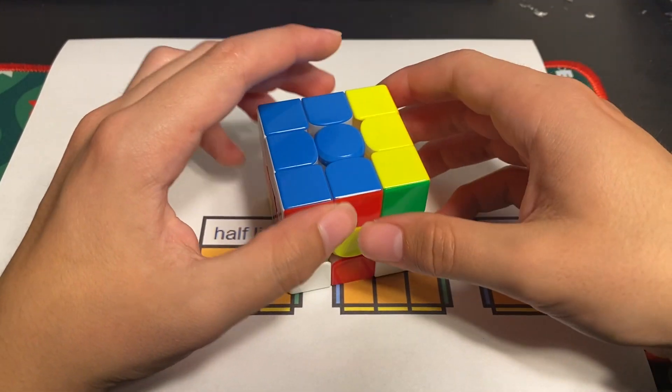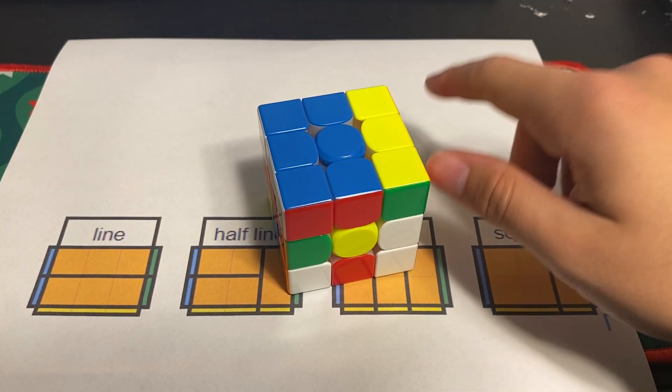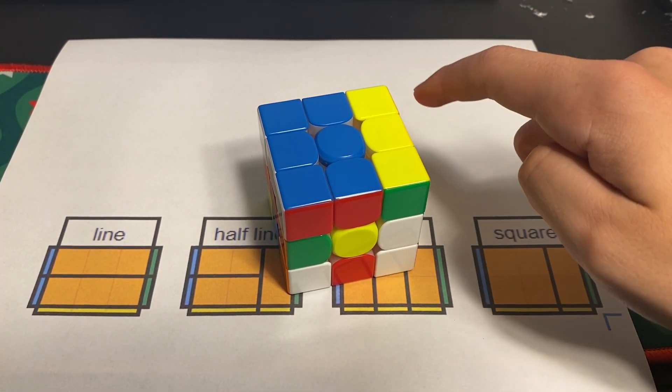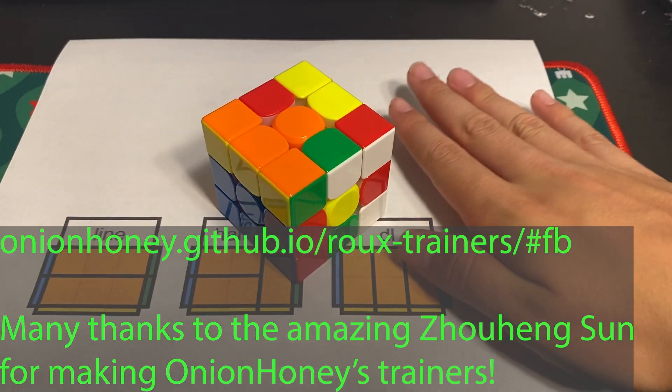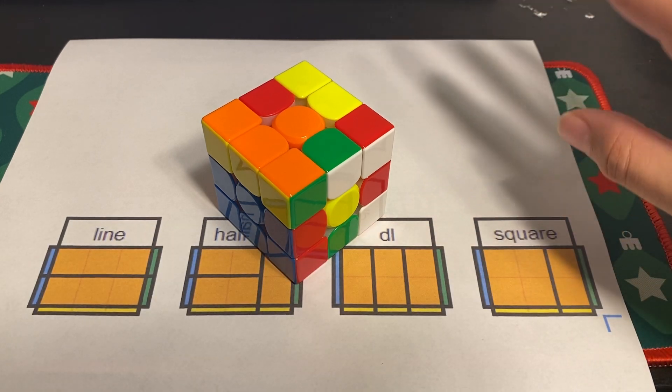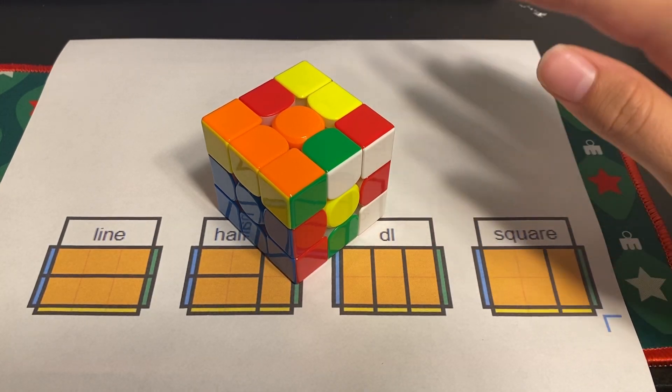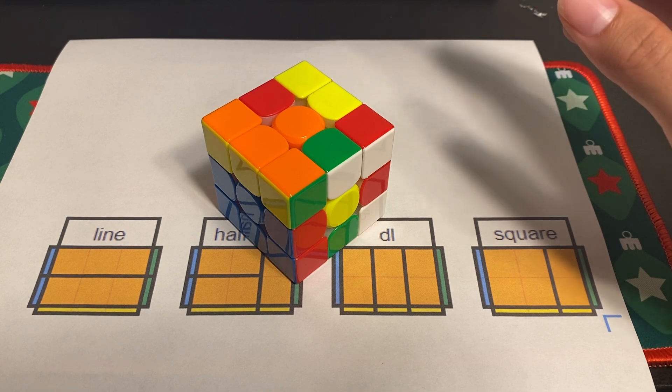Another great way to improve your blocks is to use Onion Honey's fixed first block trainer, which I'm going to link in the description. It's a great tool. Start really low move count, start with three moves and learn those basic inserts and then go up to four moves and five moves as you get better.